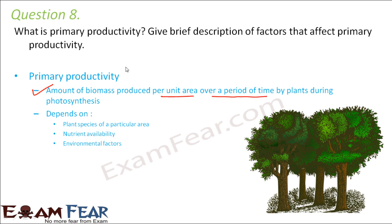As we have discussed before, there are two types of primary productivity. One is gross primary productivity, which is the total amount of biomass that is being produced. The other is net primary productivity, which is gross primary productivity minus the respiration losses — that is, minus the expenses of the plant itself.